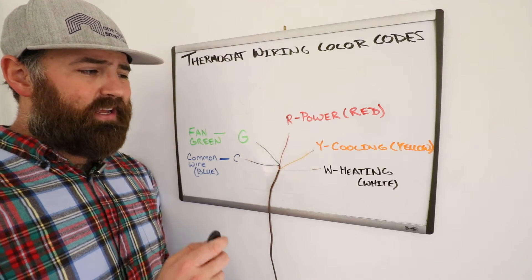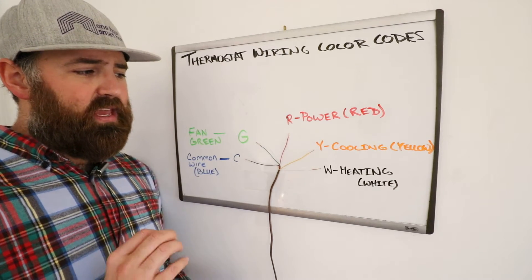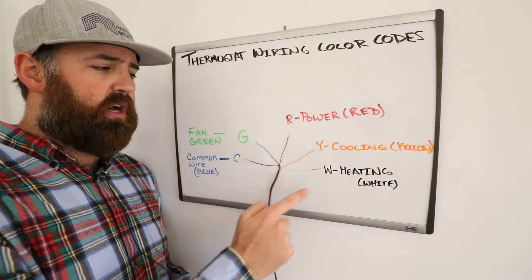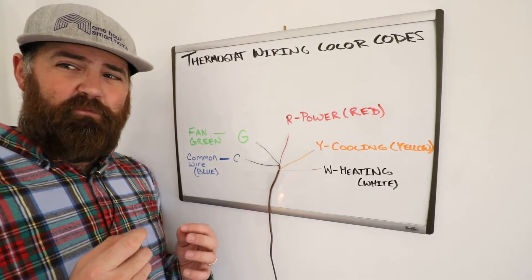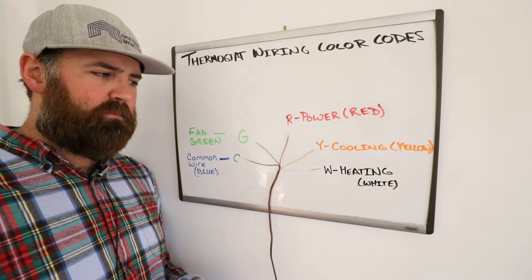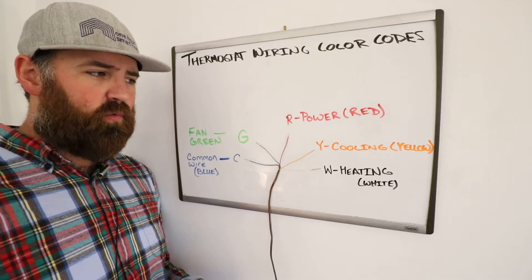The W-wire is the heat wire. The heating is activated whenever you get R from W, and that will activate the furnace or burner inside your HVAC system, which will then provide you with heat.